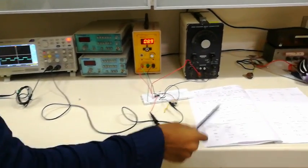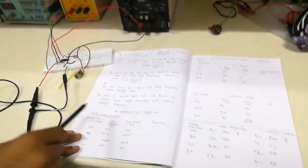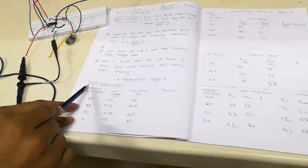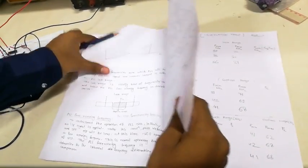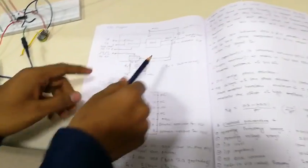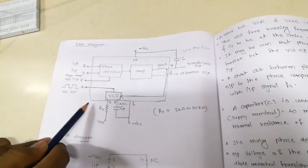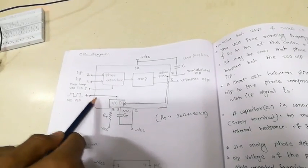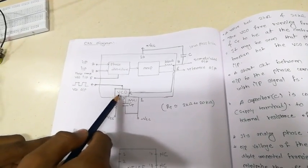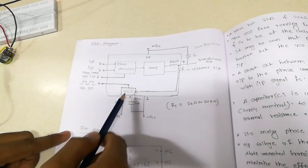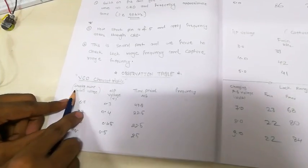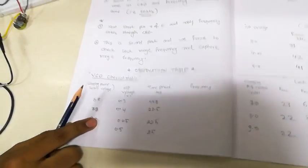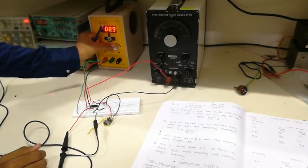Now let's see the observation table according to the characteristic. In our VCO characteristic — it's actually called that because of the internal diagram of the IC. We have to take the output at the VCO. We are going to study the VCO characteristic by changing the power supply voltage — for example from 6 volt to 7 volt.